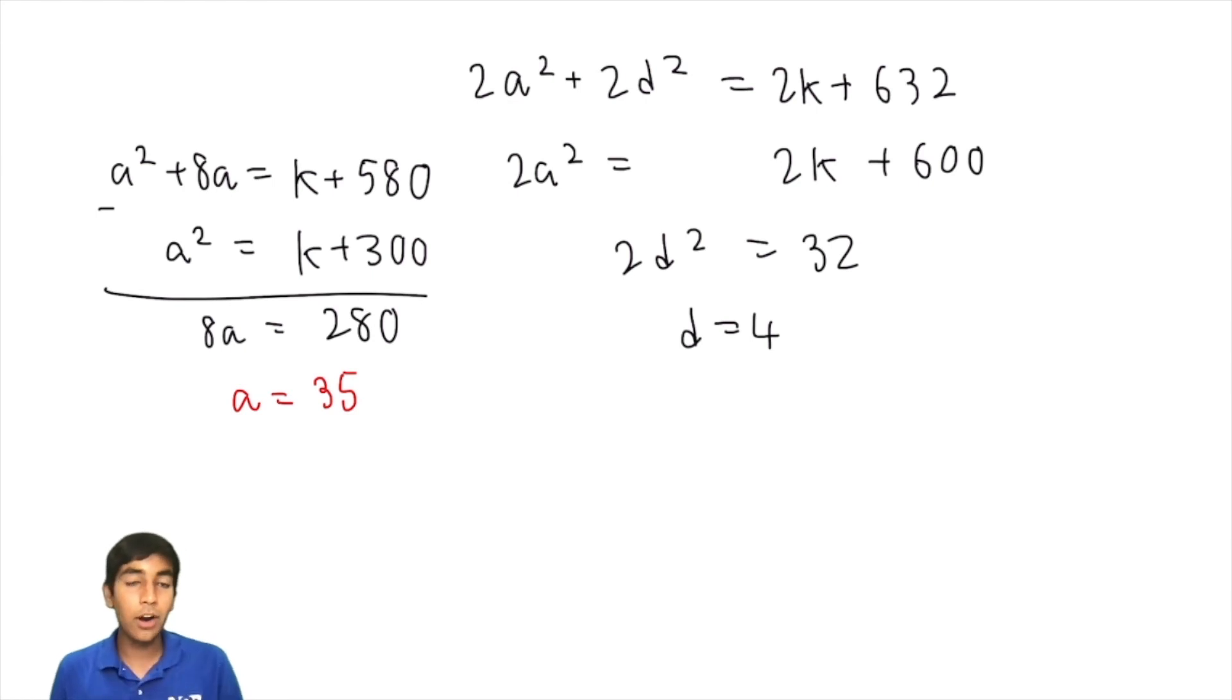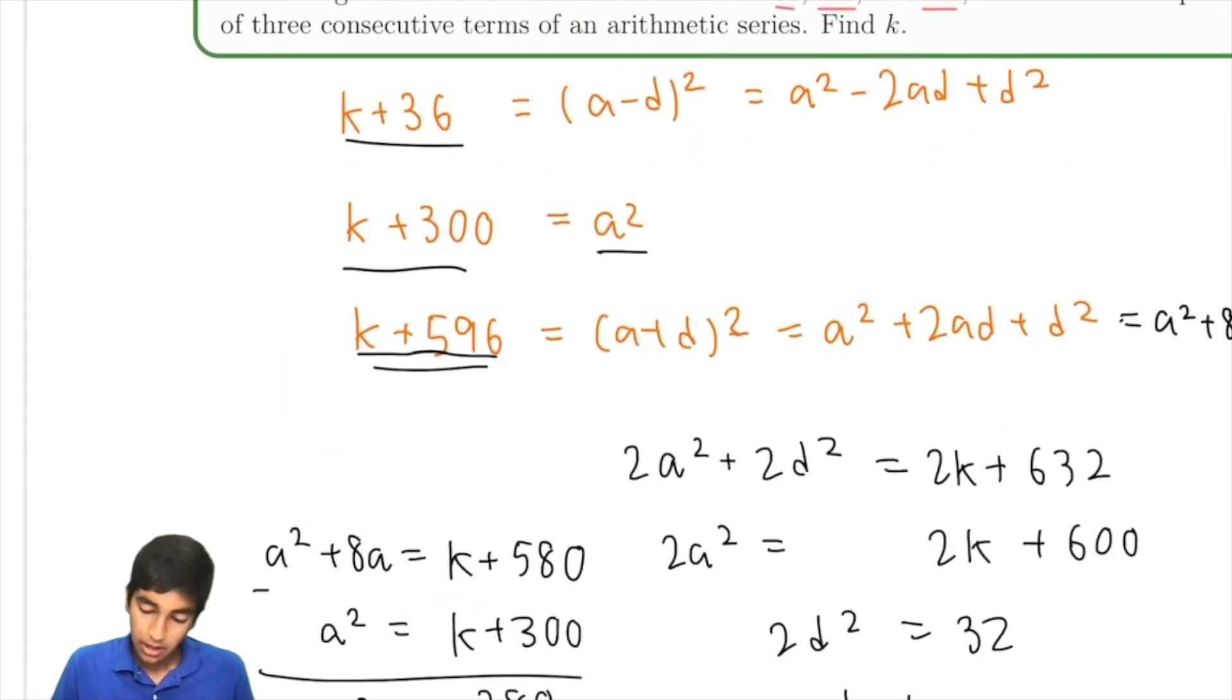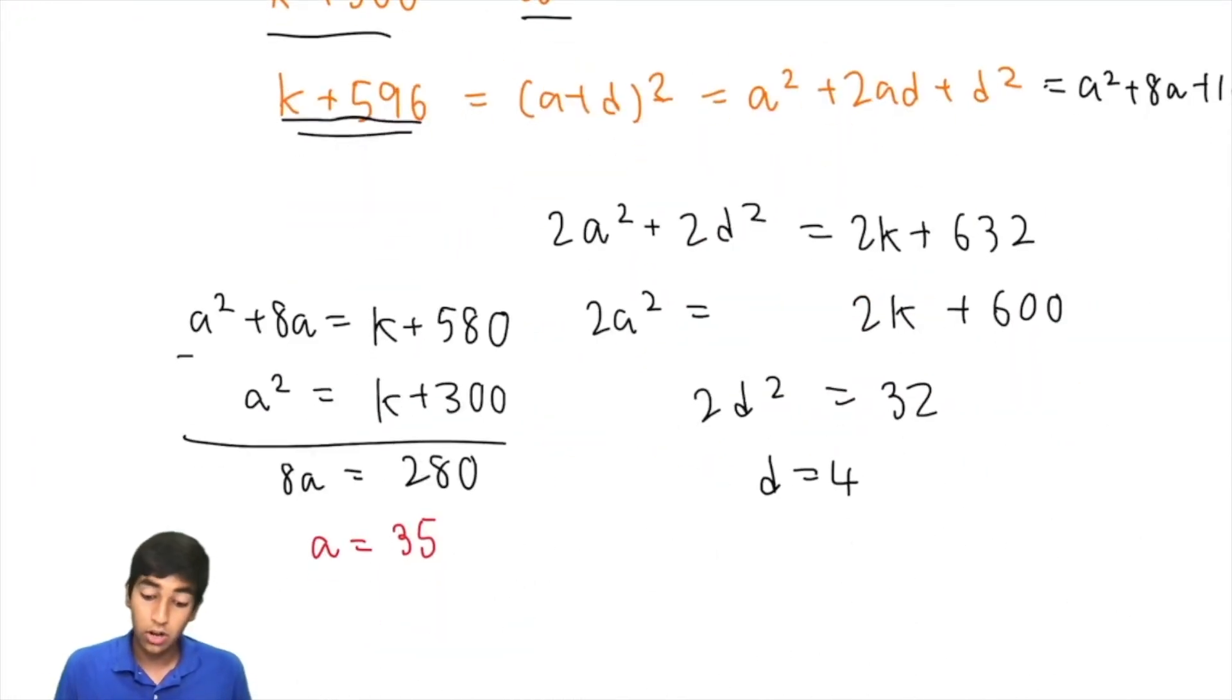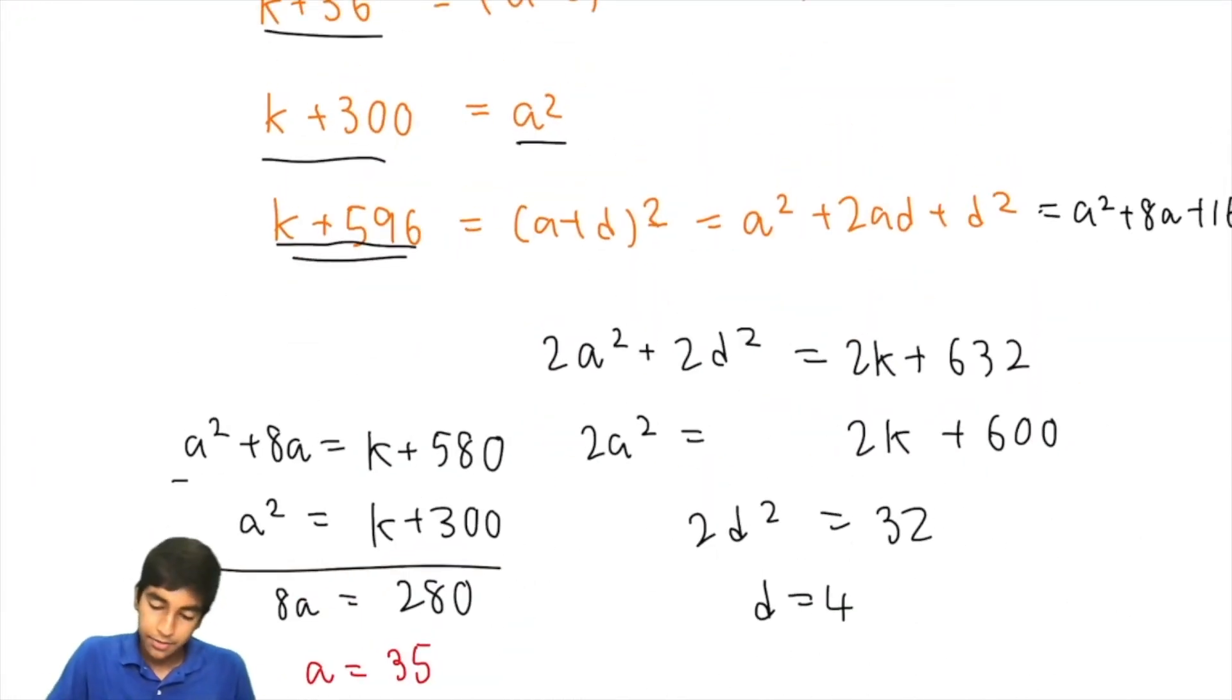d is 4, a is 35, therefore we're asked to find k. We need to find k. This is just 1225, 35 squared, because 3 times 4 is 12, with 25 at the end. The squared trick. So, you subtract 300 from both sides to get 925. And that is the answer to this problem.